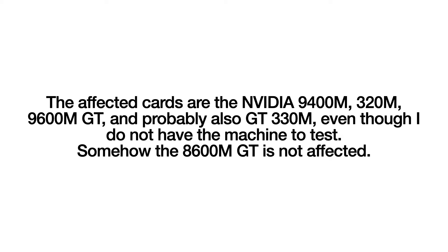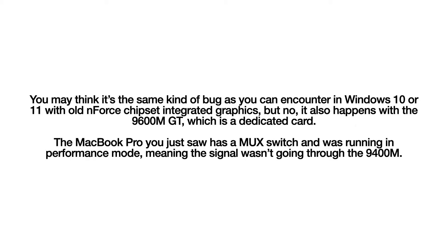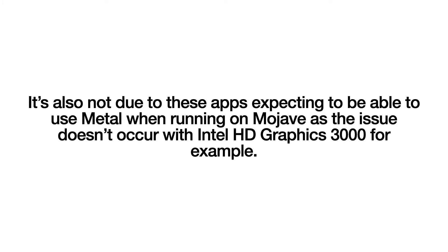Somehow the 8600M GT is not affected. You may think it's the same kind of bug as you can encounter in Windows 10 or 11 with old enforced chipset integrated graphics, but no — it also happens with the 9600M GT, which is a dedicated card. The MacBook Pro you just saw has a MUX switch and was running in performance mode, meaning the signal wasn't going through the 9400M. It's also not due to these apps expecting to use Metal when running on Mojave, as the issue doesn't occur with Intel HD Graphics 3000.